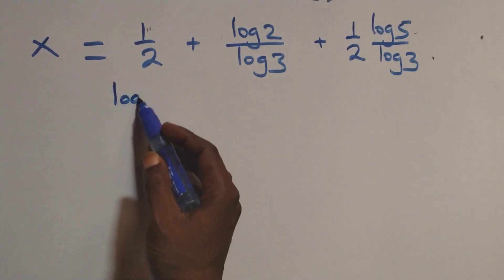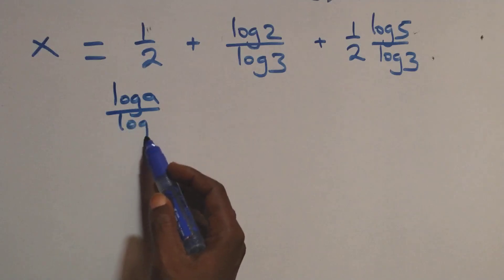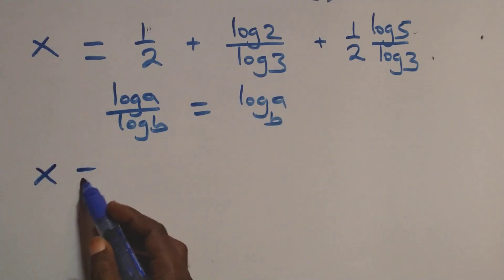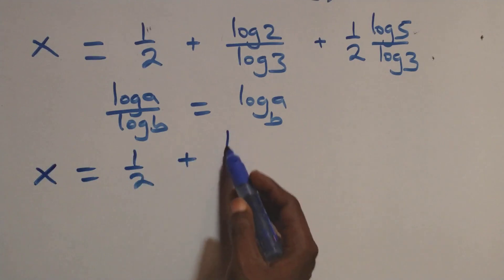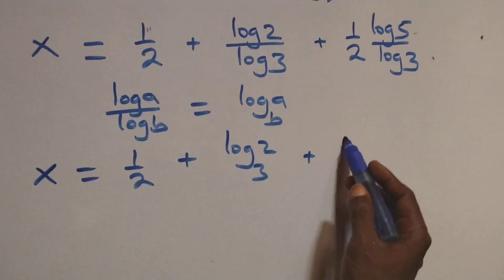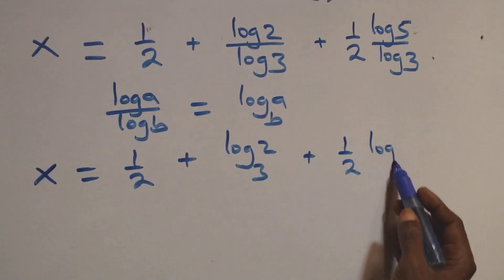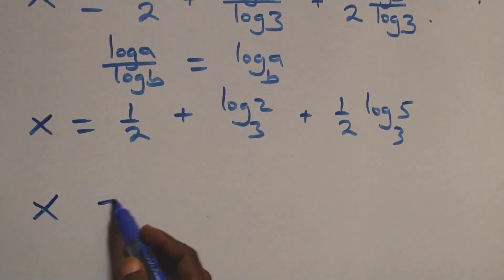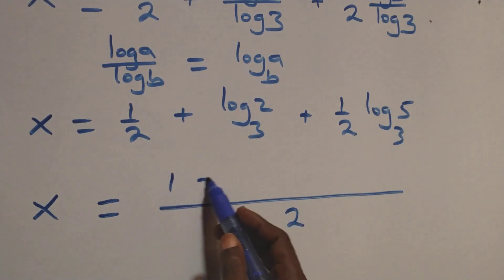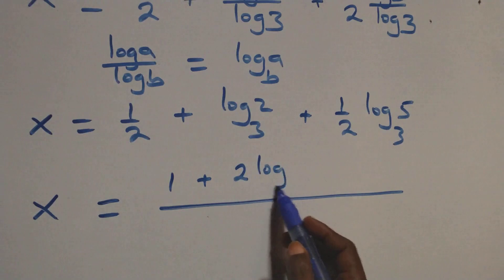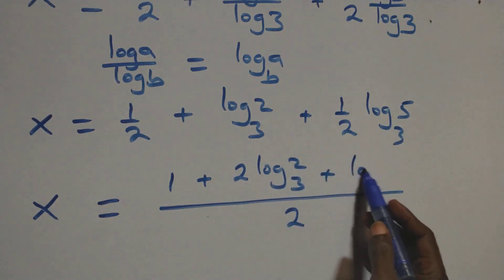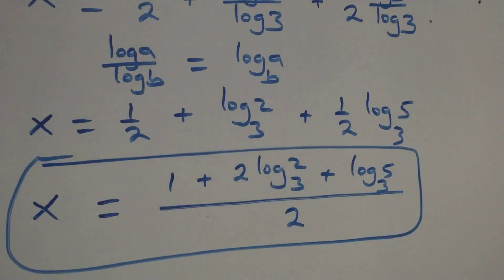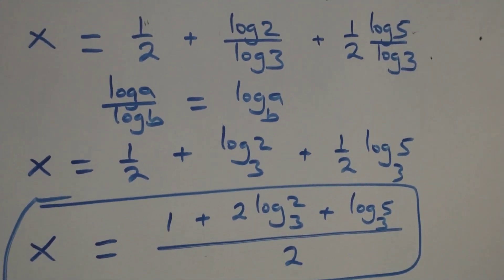We apply the change of base formula: log(a)/log(b) = log_b(a). So x = 1/2 + log_3(2) + (1/2)·log_3(5). Combining into one fraction: x = (1 + 2·log_3(2) + log_3(5)) / 2. That is the value of x.